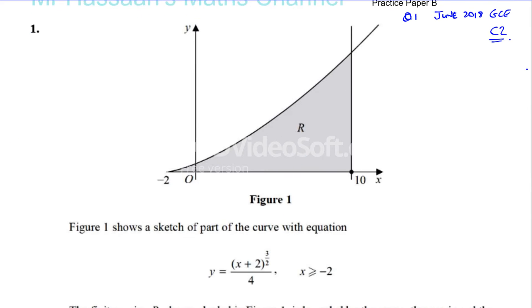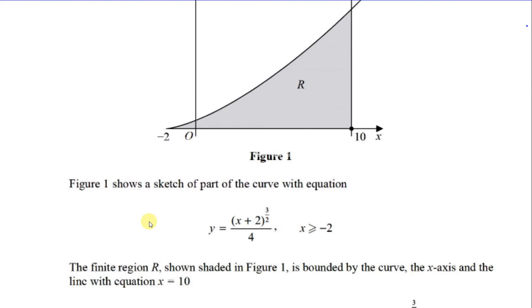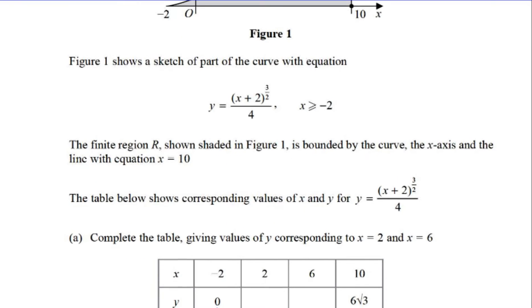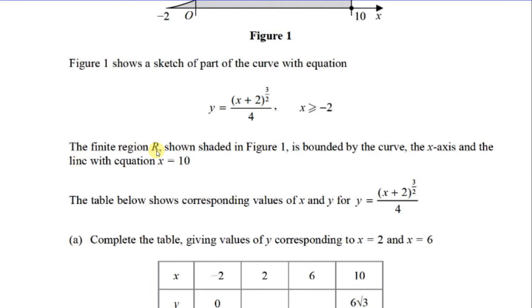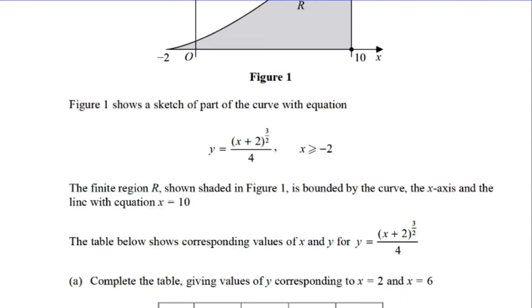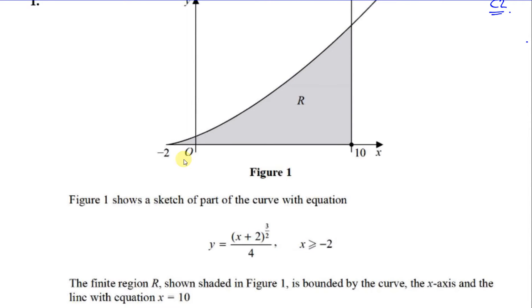Question one says: figure one shows a sketch of part of the curve with equation y equals (x + 2)^(3/2) divided by 4, where x is greater than or equal to negative 2. Of course x can't be less than negative 2, because that would give a square root of a negative number, which is undefined. The finite region R shown shaded in figure one is bounded by the curve, the x-axis, and the line x equals 10.